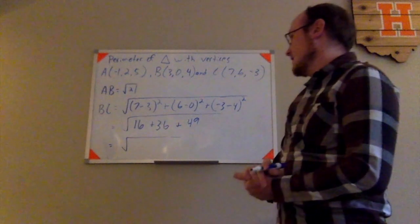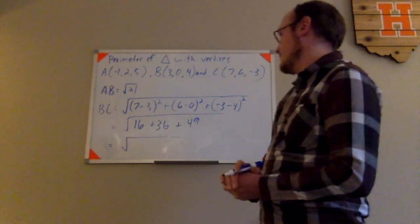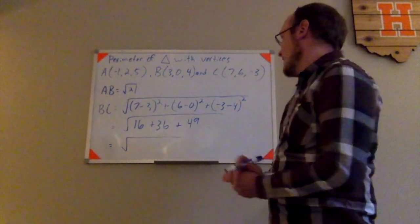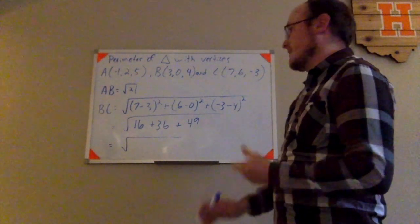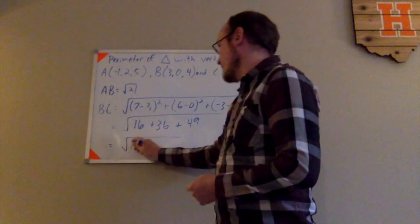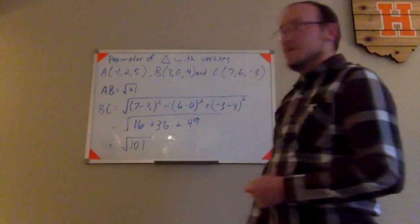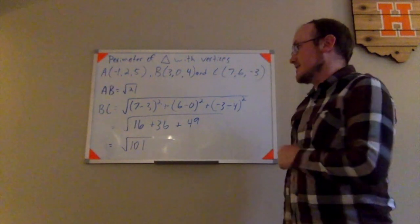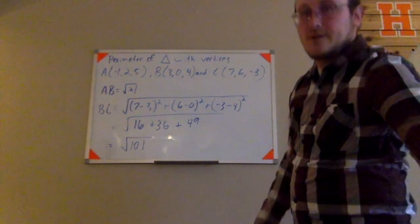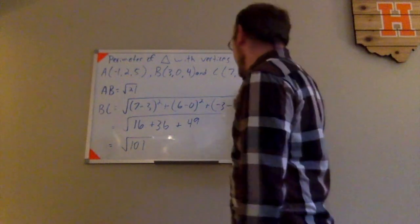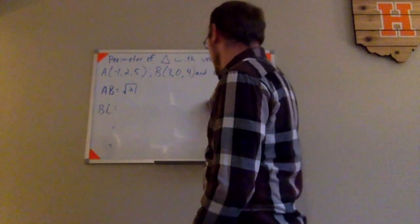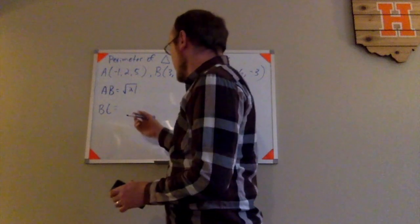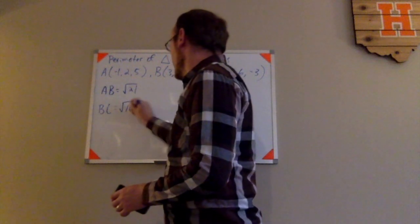Let's see. 16 and 36 would make 52 and 49. Now 52 and 49 would make 101. So I would have the square root of 101 for that side BC. I'll go ahead and leave that off to the side here. The square root of 101.